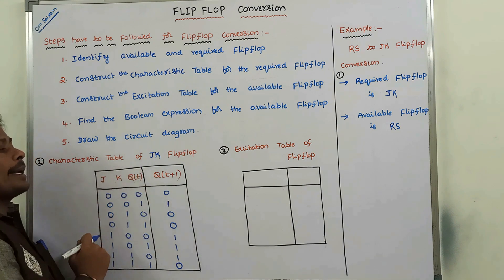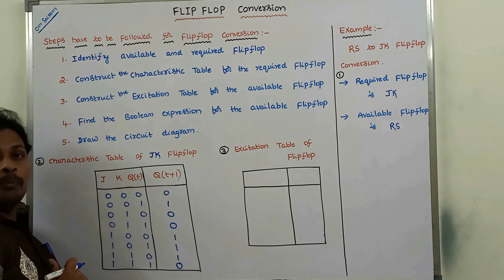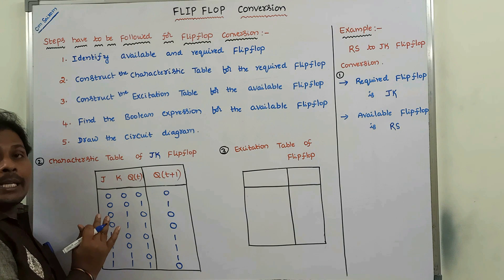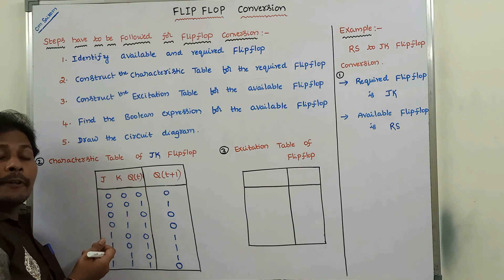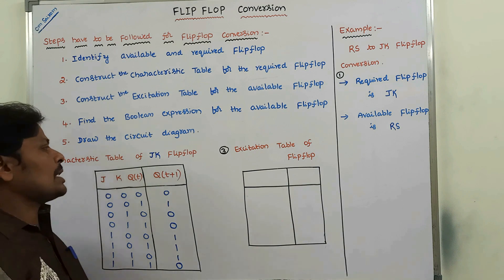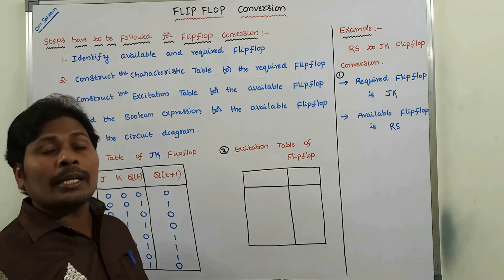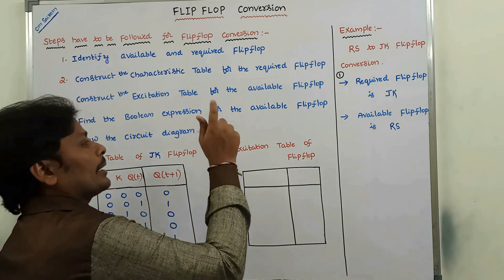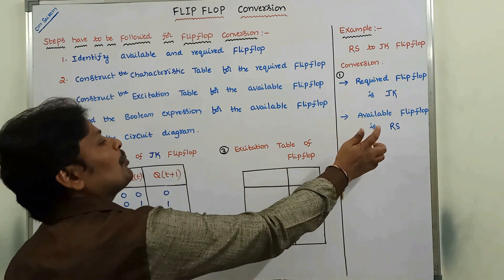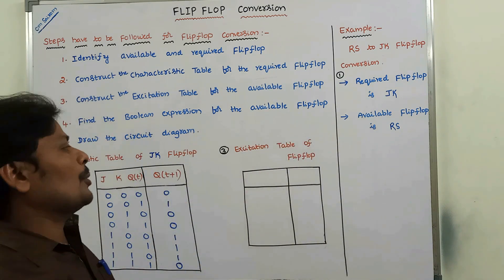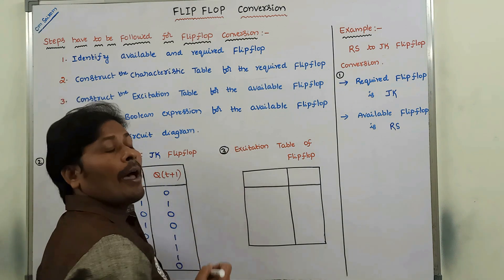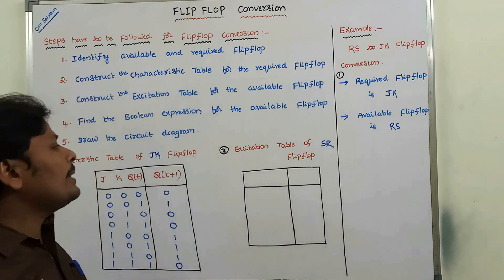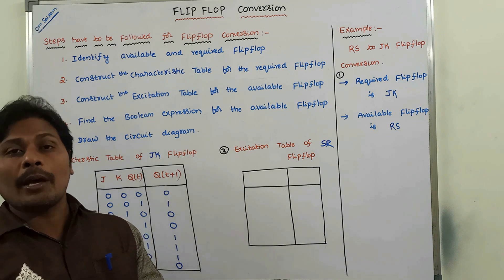So this is the characteristic table of JK flip-flop. If anybody wants a clear explanation of the characteristic table of JK flip-flop, please refer to the previous videos. The third step is construct the excitation table of SR flip-flop, which is the available flip-flop.